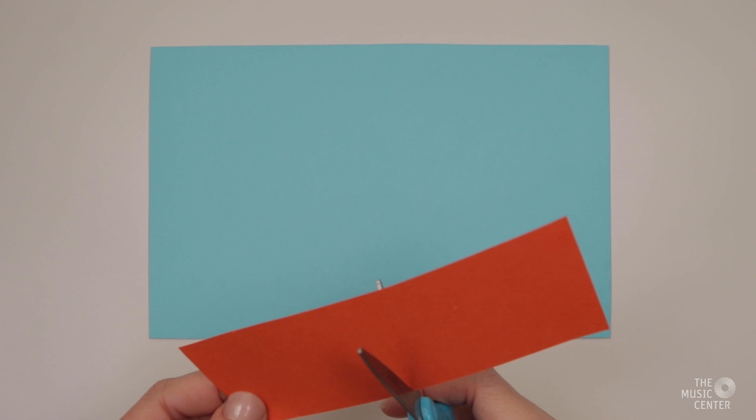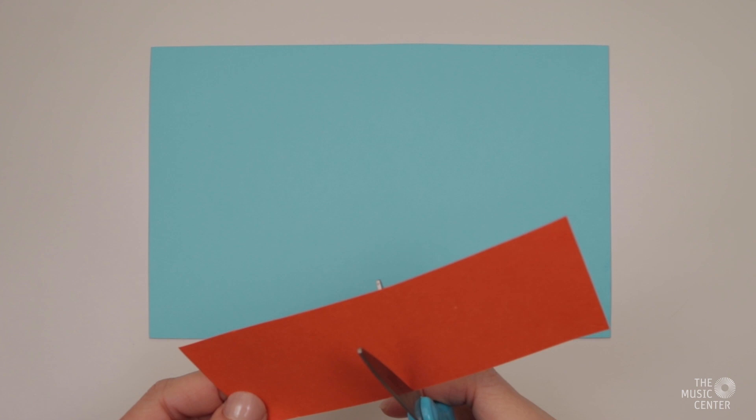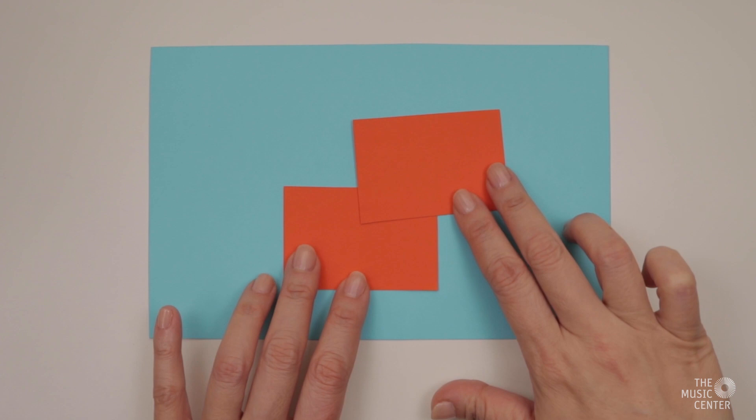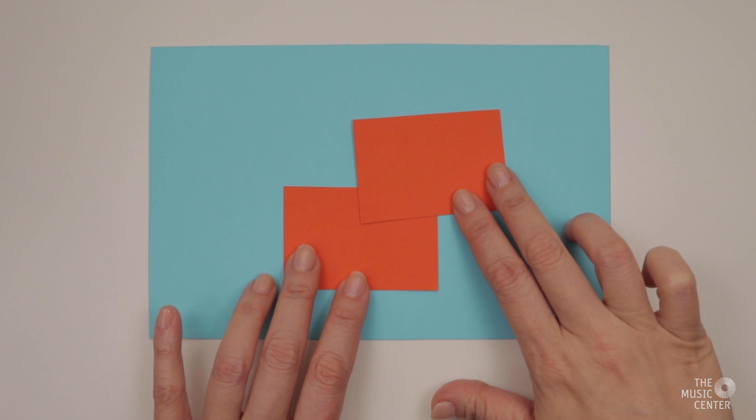I'll make some rectangles by making straight cuts along this orange paper. We can make different sizes of rectangles and squares by cutting into these pieces too.